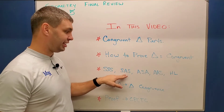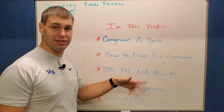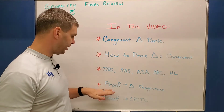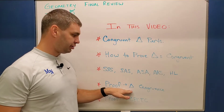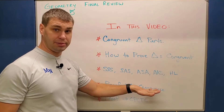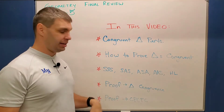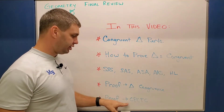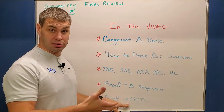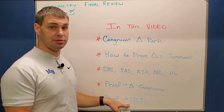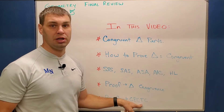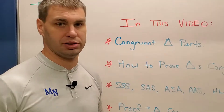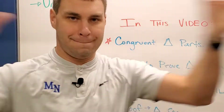We're going to use side-side-side, side-angle-side, and those things. We're going to give you two proofs — one where we prove two triangles to be congruent, and then the second one we're going to use those two congruent triangles to show that their congruent parts are also congruent. So let's get into it.